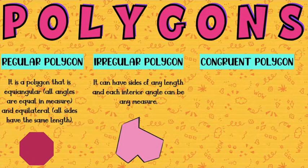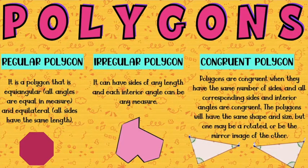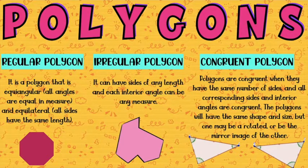Let's proceed to the last one — congruent polygons. Polygons are congruent when they have the same number of sides, and all corresponding sides and interior angles are congruent. The polygons will have the same shape and size, but one may be rotated or be the mirror of the other. That is an example of a congruent polygon.